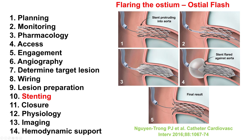Once a stent is placed and protrudes into the aorta, it can potentially cause difficulties with equipment getting back in as it may hit the stent struts. So it is desirable to flare the ostium of the stent. That can be done by withdrawing the stent balloon and inflating at high pressure. Another way — more predictable and more effective — is by using the Osteal Fluss balloon, which has two components: a distal balloon sized one-to-one to the artery placed inside the stent, and a proximal balloon that inflates at low atmospheres. It pushes the struts of the deployed stent against the aortic wall, facilitating engagement and advancement of equipment through the stent.